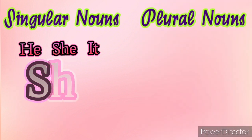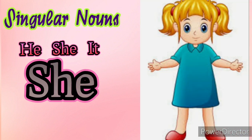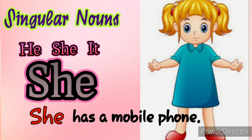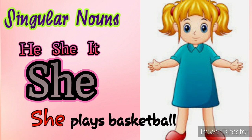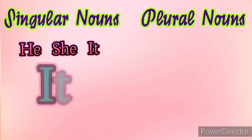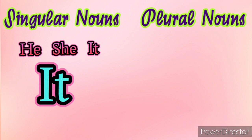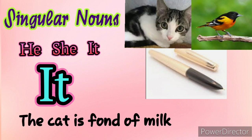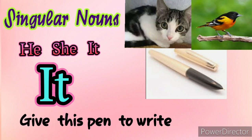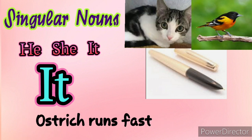'She' is used in the place of singular nouns, specially for feminine gender. For example: Bhuvana has a mobile phone — She has a mobile phone. Niveta plays basketball — She plays basketball. 'It' is used instead of singular nouns in the place of animals, birds, or things. For example: The cat is fond of milk — It is fond of milk. Give this pen to write — Give it to write. Ostrich runs fast — It runs fast.